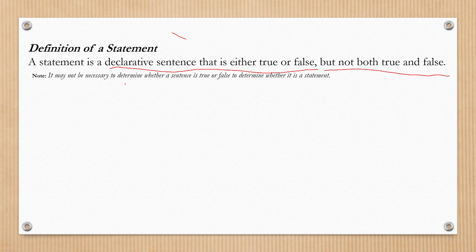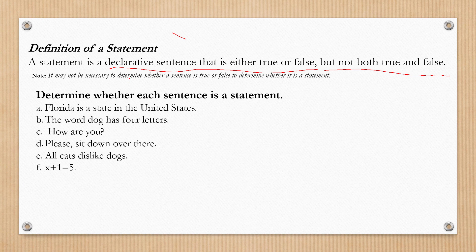Let us have examples. Determine whether each sentence is a statement. Letter A: 'Florida is a state in the United States.' Letter B: 'The word dog has four letters.' Letter C: 'How are you?' Letter D: 'Please sit down over there.' Letter E: 'All cats dislike dogs.' Letter F: 'x plus one is equal to five.'